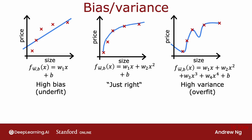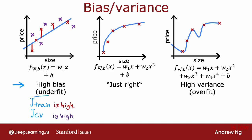Looking at the example on the left: if you compute J_train, how well does the algorithm do on the training set? Not that well. J_train here would be high because there are large errors between the examples and the model's predictions. And J_CV — if you had new examples the algorithm had not previously seen — the algorithm also doesn't do well on those. So J_CV would also be high. One characteristic of an algorithm with high bias, something that is underfitting, is that it's not even doing well on the training set. When J_train is high, that gives you a strong indicator that this algorithm has high bias.